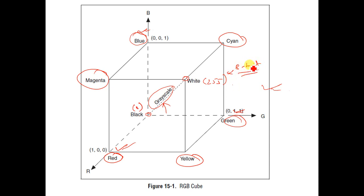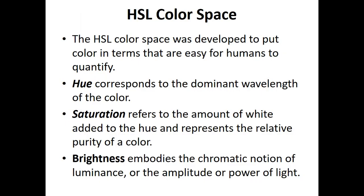All the points across this diagonal line are basically the grayscale points, and along this line there is no color information. Any change in the pixel values along this line is due to variation in the light component — the white light component.